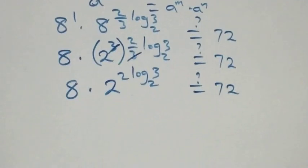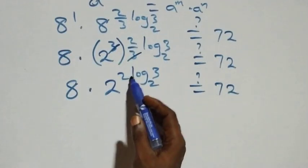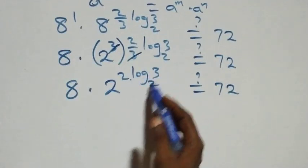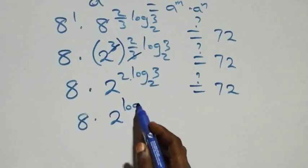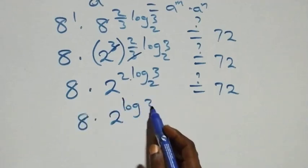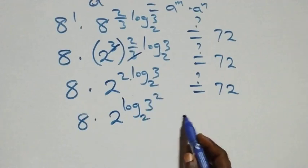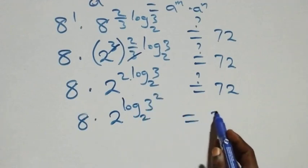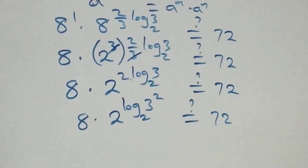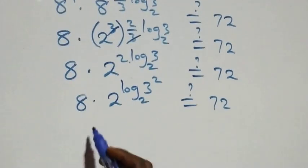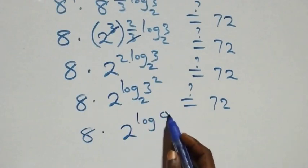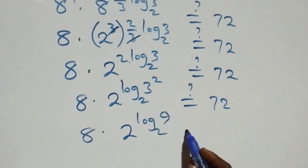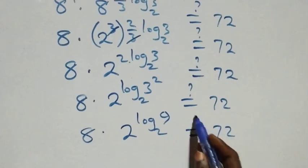Reversing the power, 2 comes up: 8 times 2 raised to power log base 2 of 9 equals 72. Since 2 raised to log base 2 of 9 equals 9, we have 8 times 9 equals 72, which confirms the left-hand side equals the right-hand side.